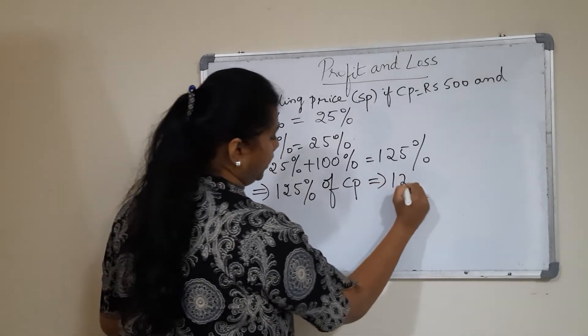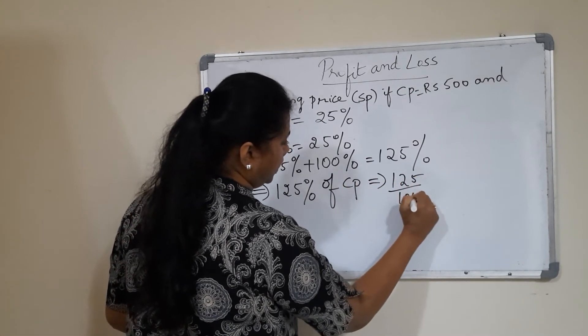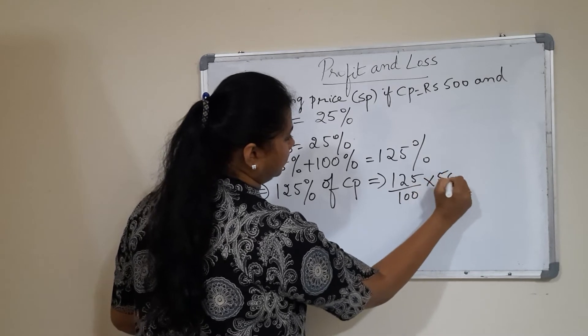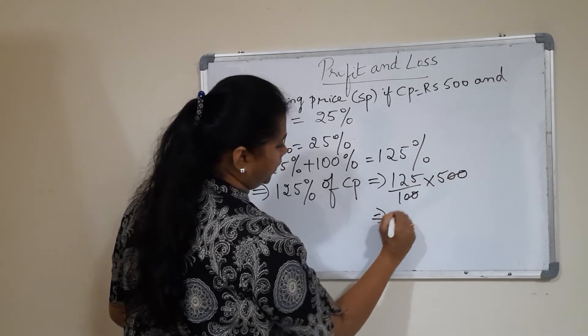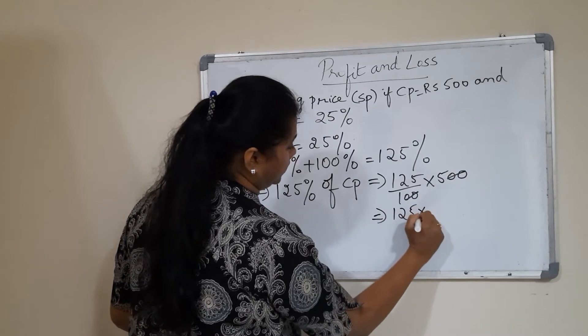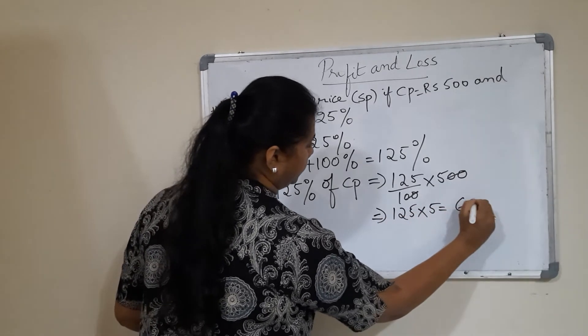That implies 125 by 100 into the cost price, which is given as 500. Now cancelling these two zeros, we are left with 125 into 5, which is 625 rupees.